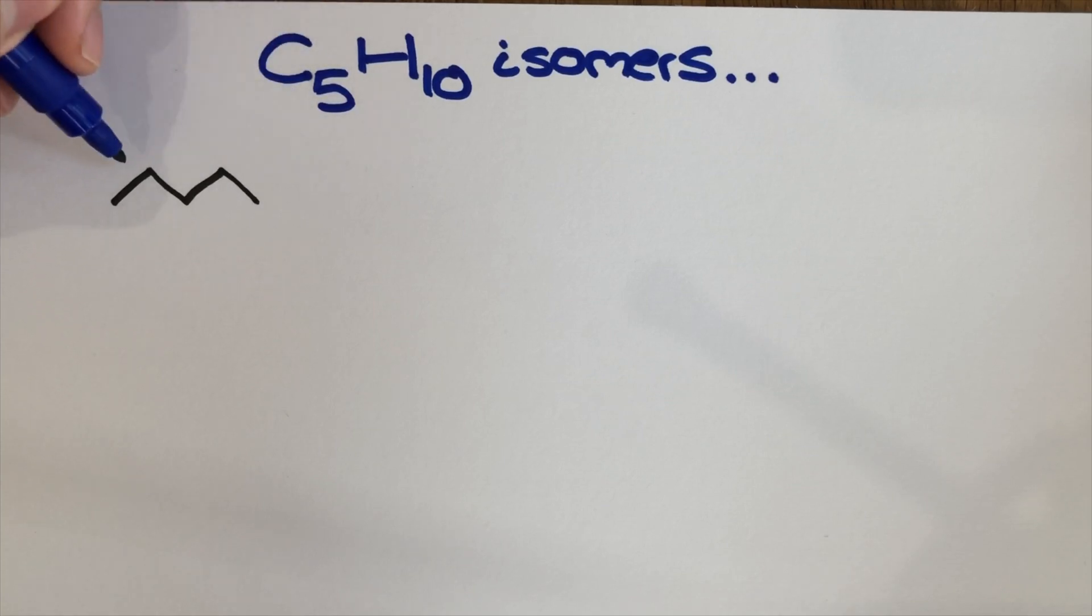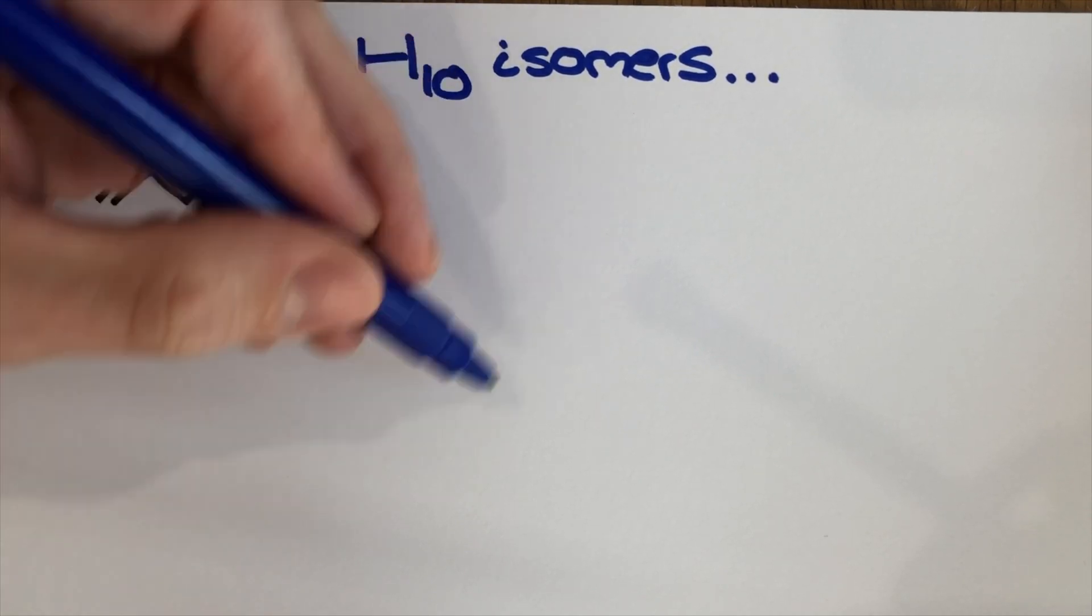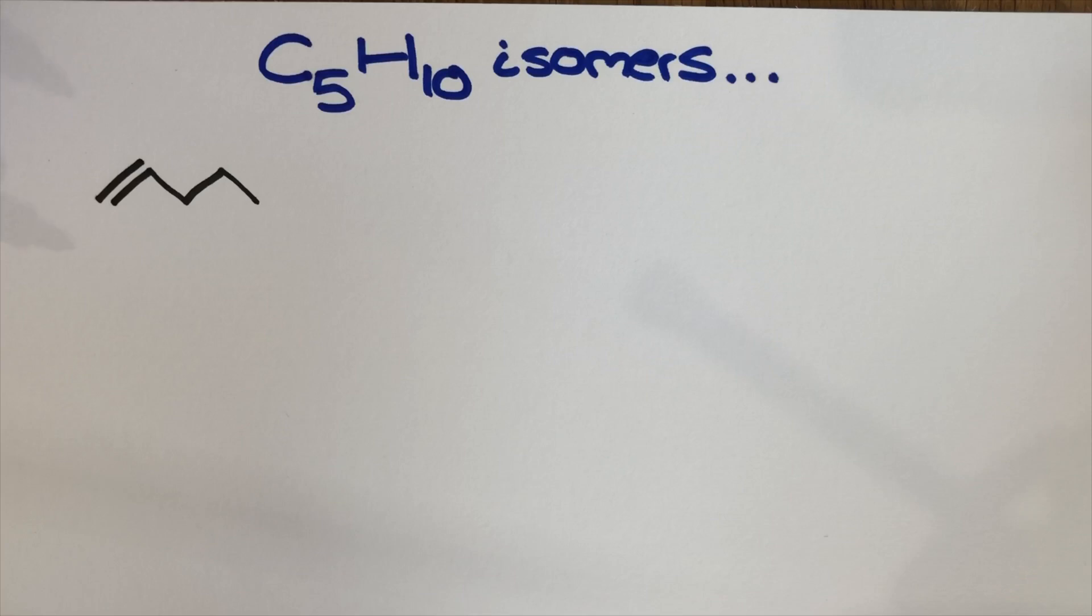So I'm going to use skeletal and we can see here what I've done is I've put the double bond at the end here. So I've got pent-1-ene. I feel like pent-1-ene is the go-to obvious example of a structure of C5H10. Everything else we now do here on the left is going to be an adaptation of this.